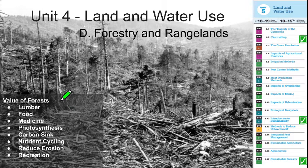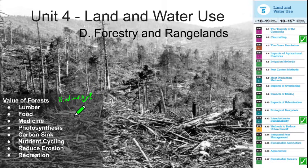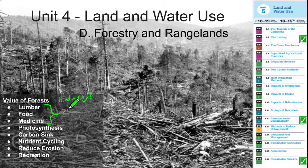Starting off with our big idea: the value of forests. When we talk about the importance of biodiversity and the value of forests, we're really talking about four main categories. The first is provisional value — lumber, food, and medicine — which we covered in Unit 2.